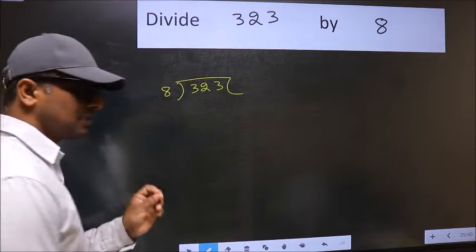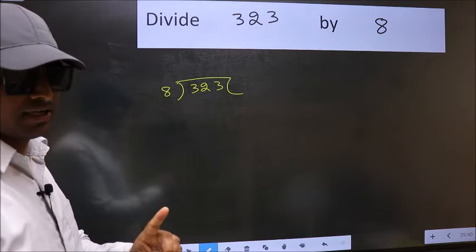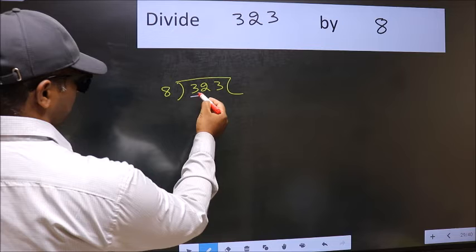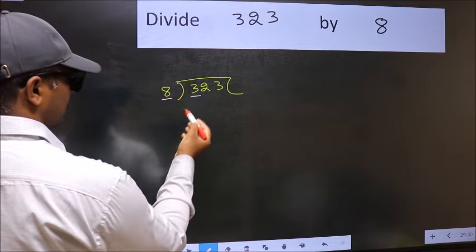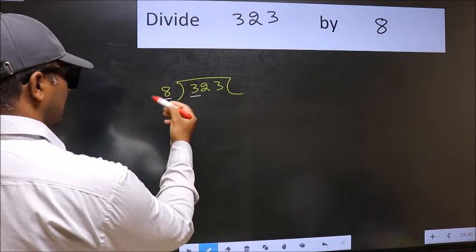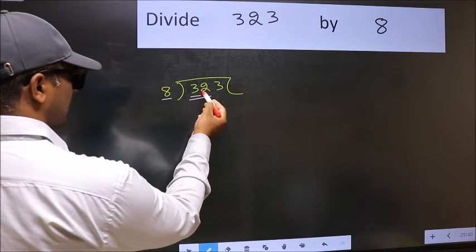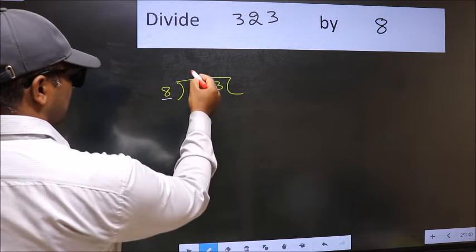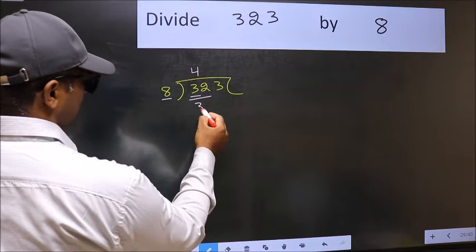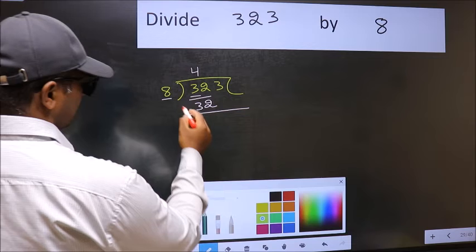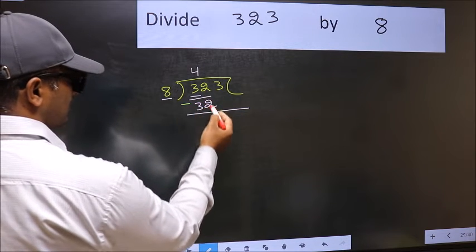This is your step 1. Next, here we have 3 and here 8. 3 is smaller than 8, so we should take 2 numbers, 32. When do we get 32 in 8 table? 8 fours 32. Now we should subtract. 32 minus 32, 0.